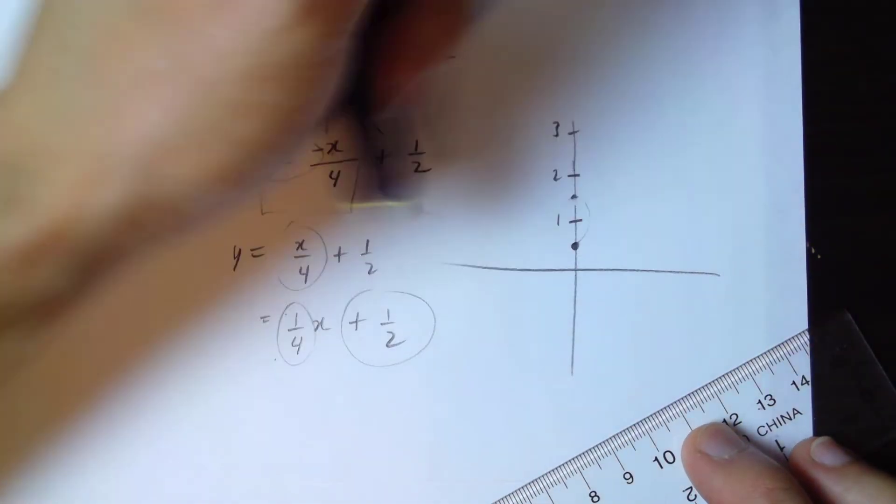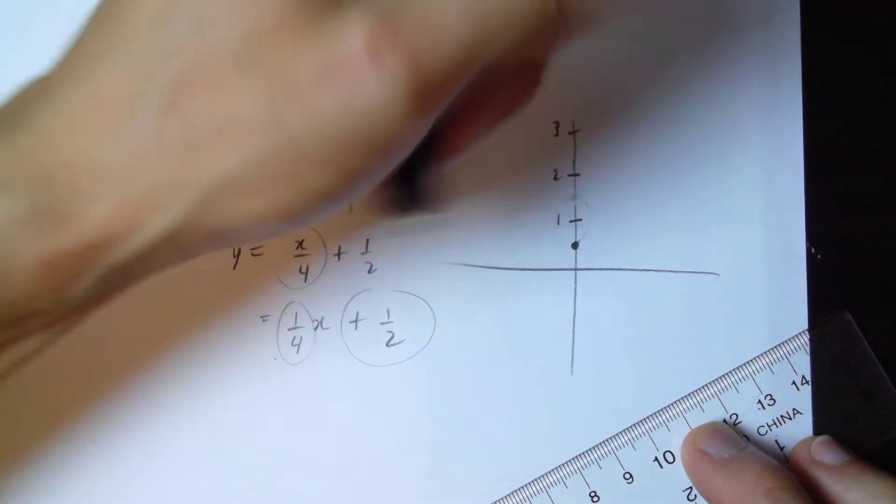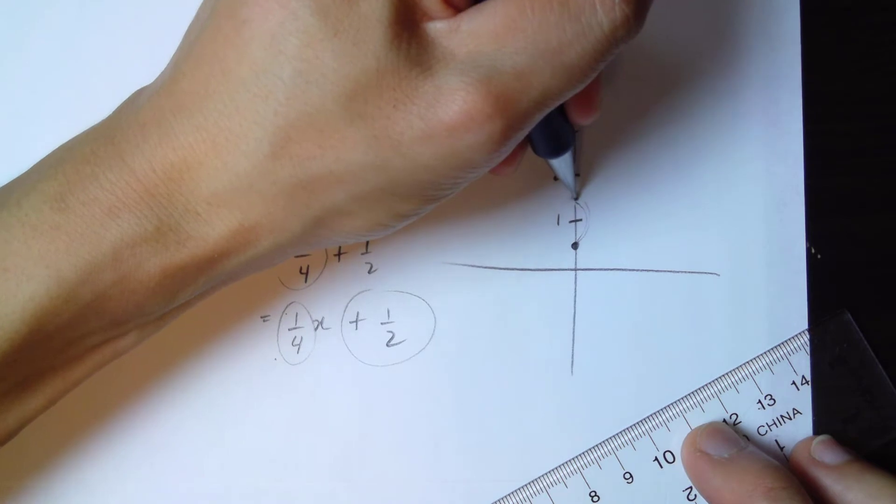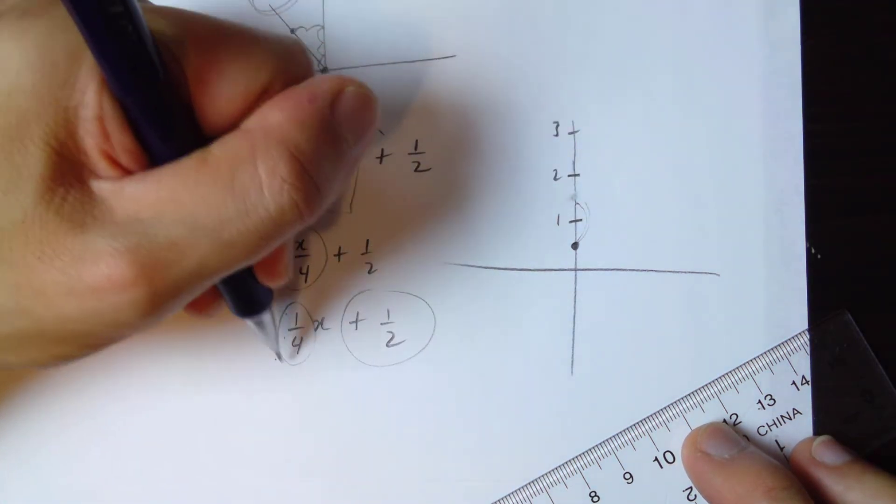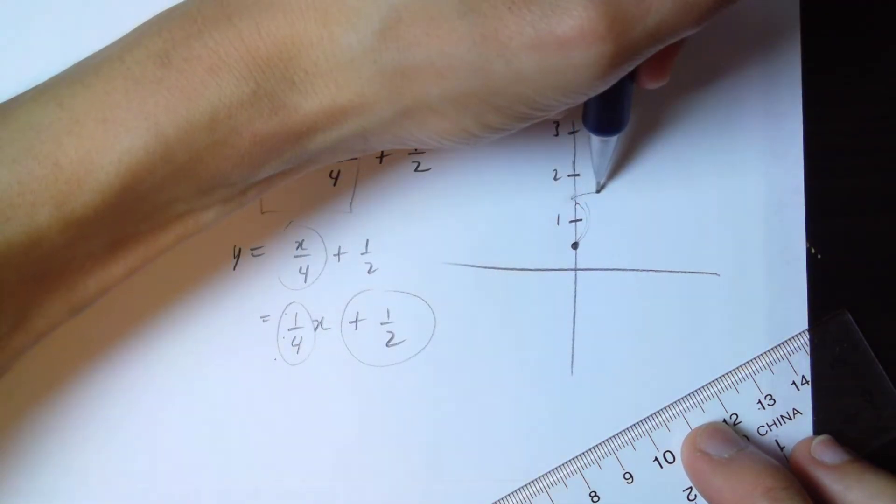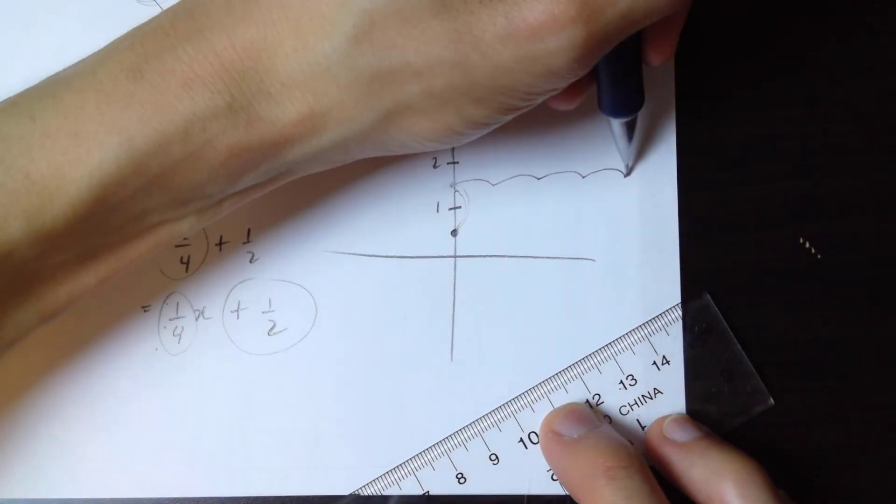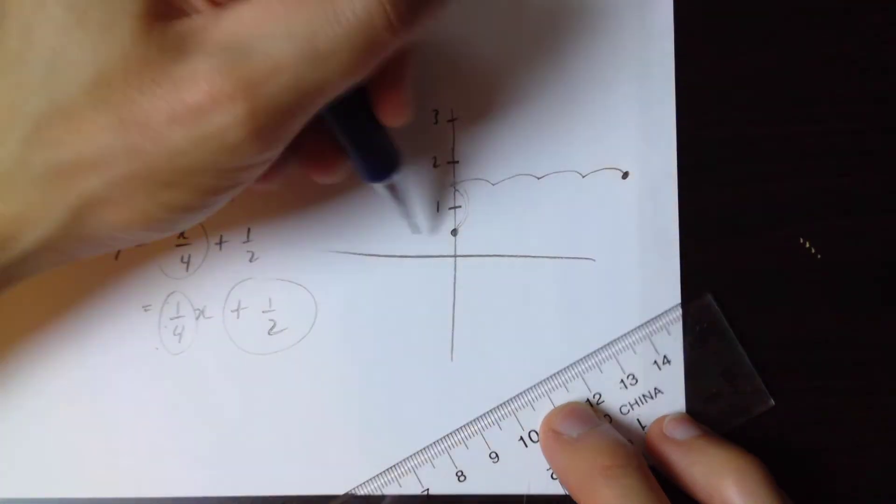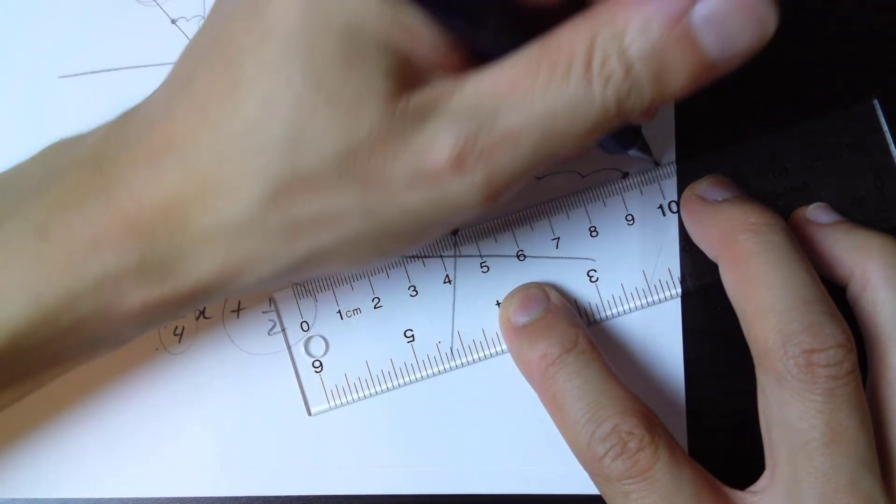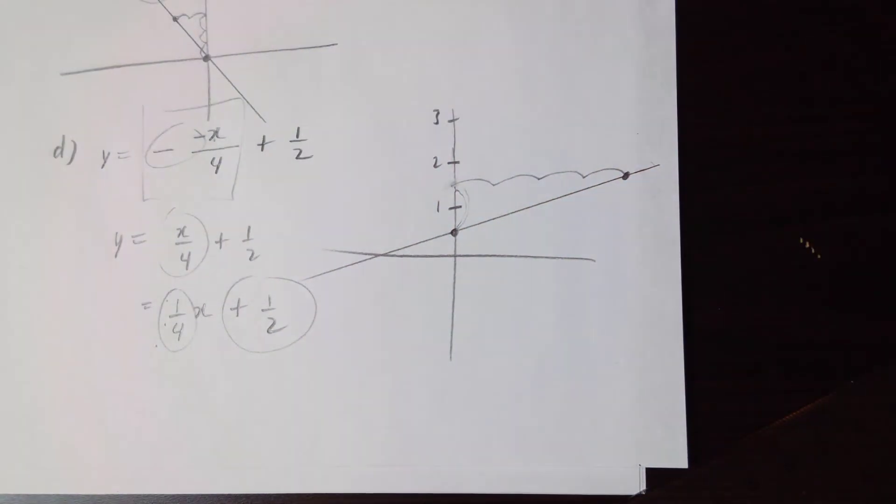So we go up one, and this is going to be four to the right, so it's going to be one, two, three, four to the right, and then put a dot here. We're going to take a ruler and then connect it. This is going to be your line, something like that. If fractions bother you, you can always convert these to decimal numbers.